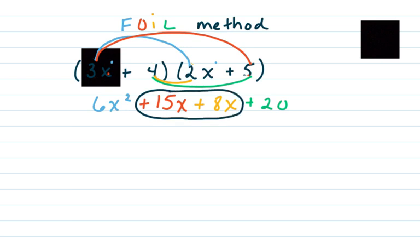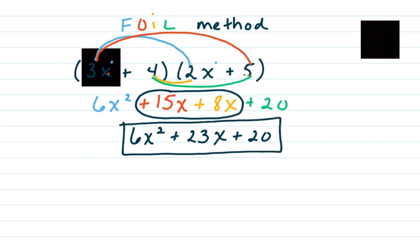We're not finished yet because we have like terms that can be combined. So my 6x squared doesn't have anything else that can combine with it. So I'll bring down 6x squared. Now I'm going to combine my positive 15x with my positive 8x. And that's going to give me a positive 23x. And then my 20 is a constant. So I'm just going to bring it down. So my final answer is this trinomial 6x squared plus 23x plus 20.